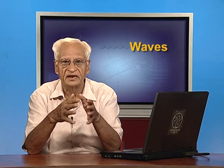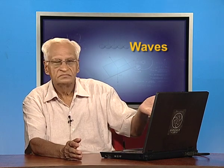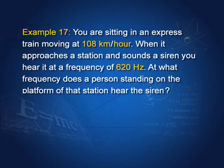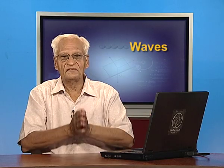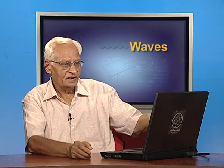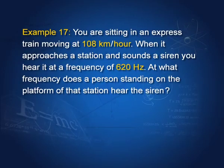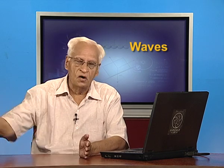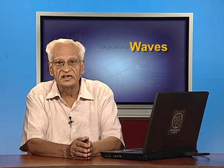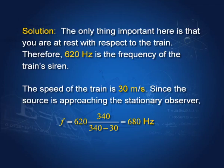Example: you are in an express train moving at 108 km/h approaching a station. Being at rest relative to the train, you hear the siren at its emitted frequency of 620 Hz. A person standing on the platform hears a higher frequency since the source approaches: f = 620 × 340/(340 − 30) = 680 Hz, where 30 m/s is 108 km/h converted.